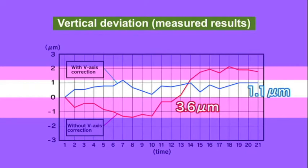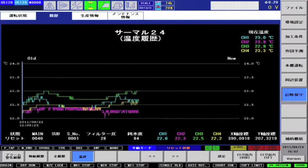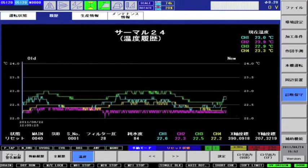This function has made it possible to maintain wire vertical precision in a standard temperature chamber at levels that would otherwise require high precision temperature control.